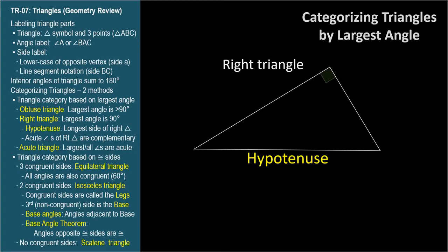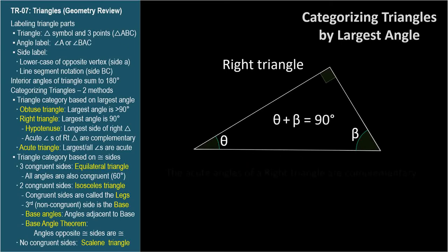Since the angles in a triangle add up to 180 degrees, the acute angles in a right triangle must be complementary, meaning they add up to 90 degrees.